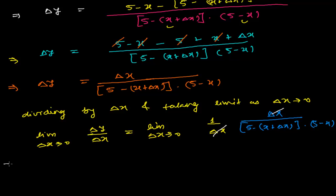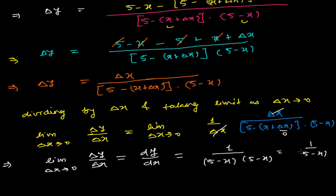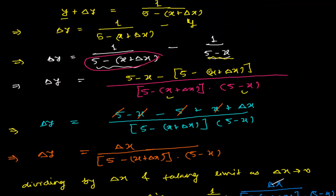The delta x in the numerator and denominator cancel out, and I'm left with the derivative dy/dx. Plugging in delta x equals 0, the expression becomes 1 over (5 minus x) times (5 minus x), which equals 1 over (5 minus x) squared. That is the derivative of the given function.